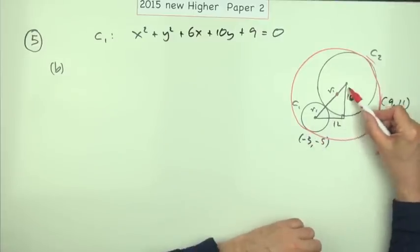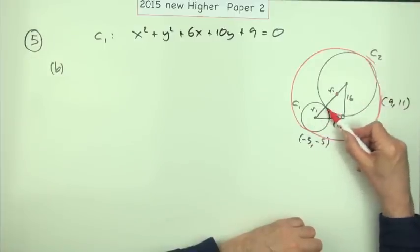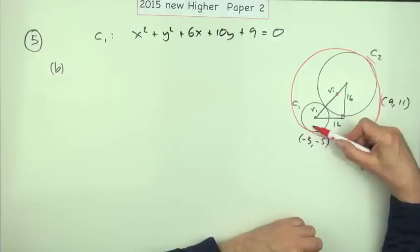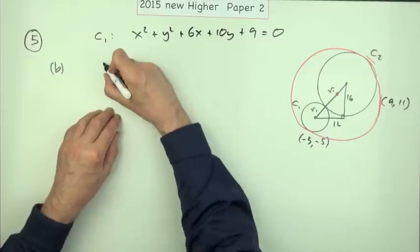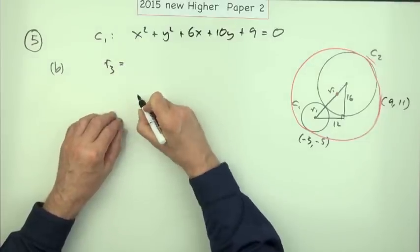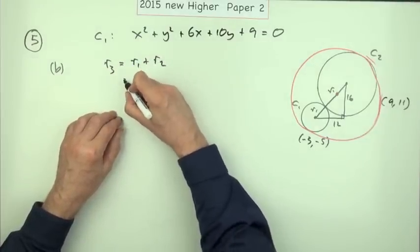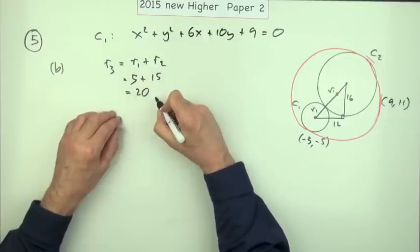But the main point is: this circle, the diameter of this circle will be the sum of the diameters of those two. So the radius of this circle will be the sum of the radii of those two. So I could put that down first of all: r3 must be equal to r1 plus r2, so that must be 5 plus 15, which was 20.